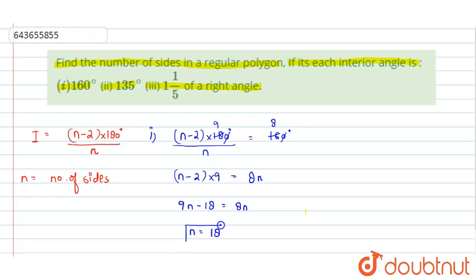So here in the first part, the number of sides in the polygon are 18. For the second part, we will again use the same formula that is (n minus 2) into 180 degree divided by n and now here the angle is given as 135 degree.